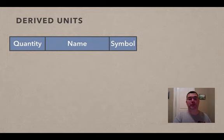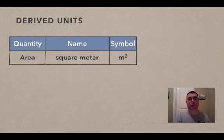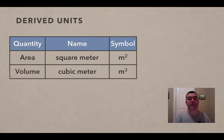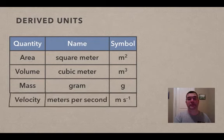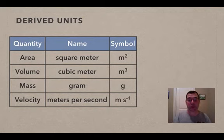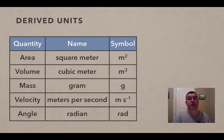After those were derived, there were some other units that were used. So if I wanted to measure area, I would need to use square meters, volume in cubic meters, mass in grams, velocity in meters per second, and notice how it's written as meters times seconds to the negative one. That's the same thing as meters divided by seconds, or m slash s, as you're used to seeing it maybe in physics. And angles are measured in radians.